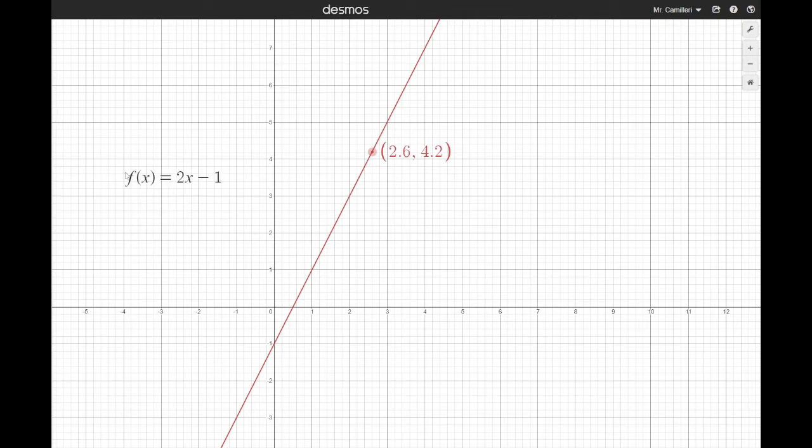Another way that we could write this linear function is using function notation. So this says f of x equals 2x minus 1, or you can say f at x equals 2x minus 1. This doesn't mean f times x.